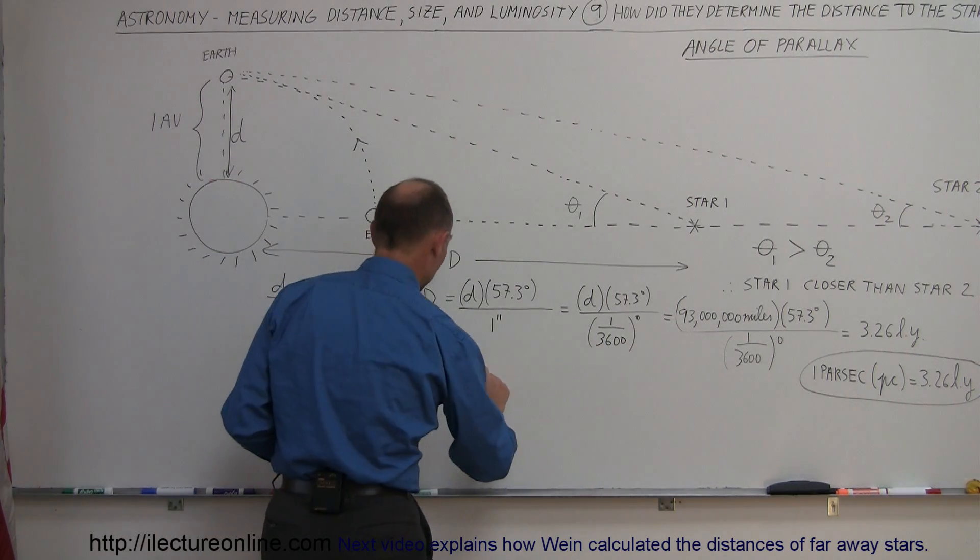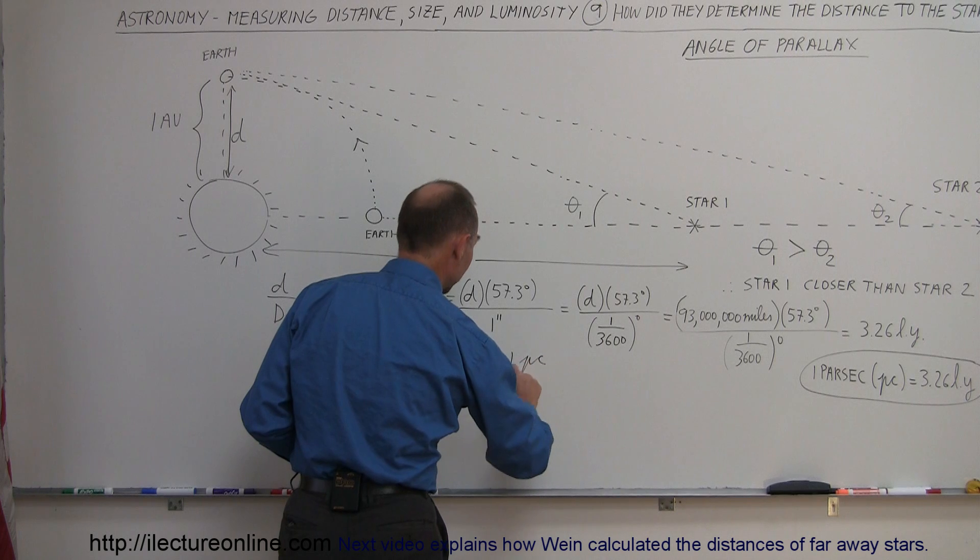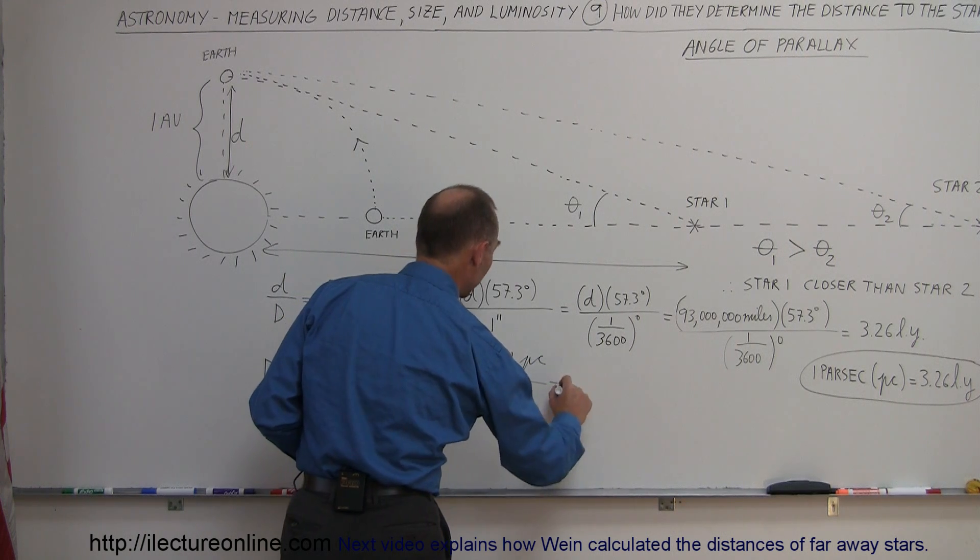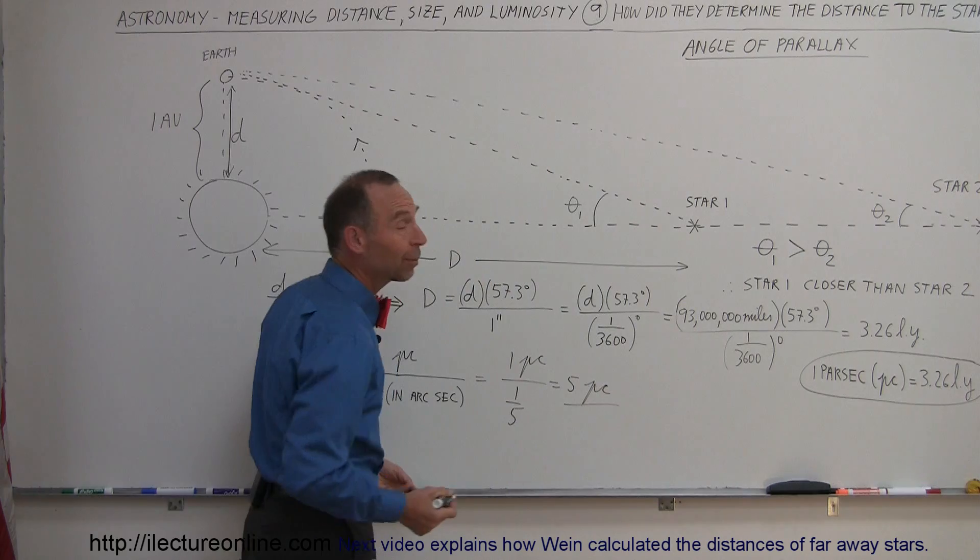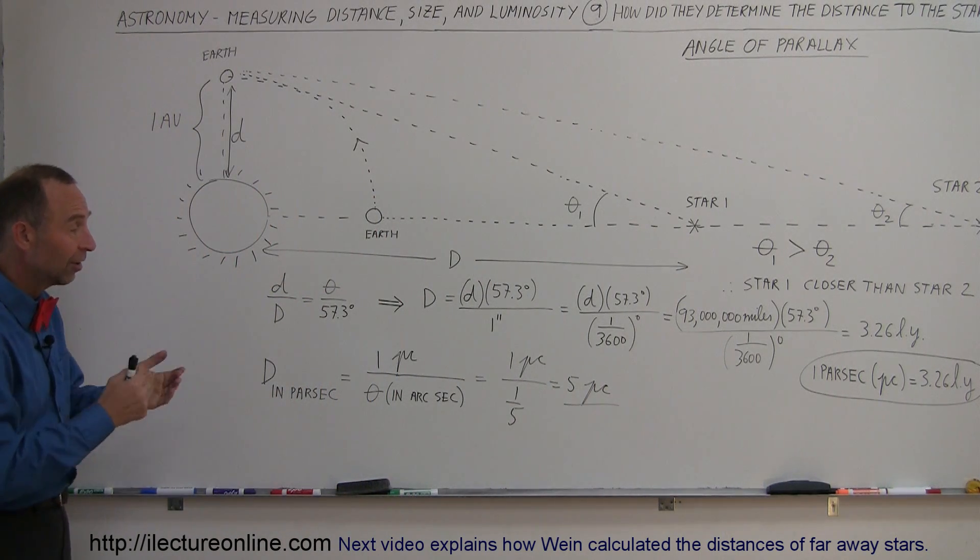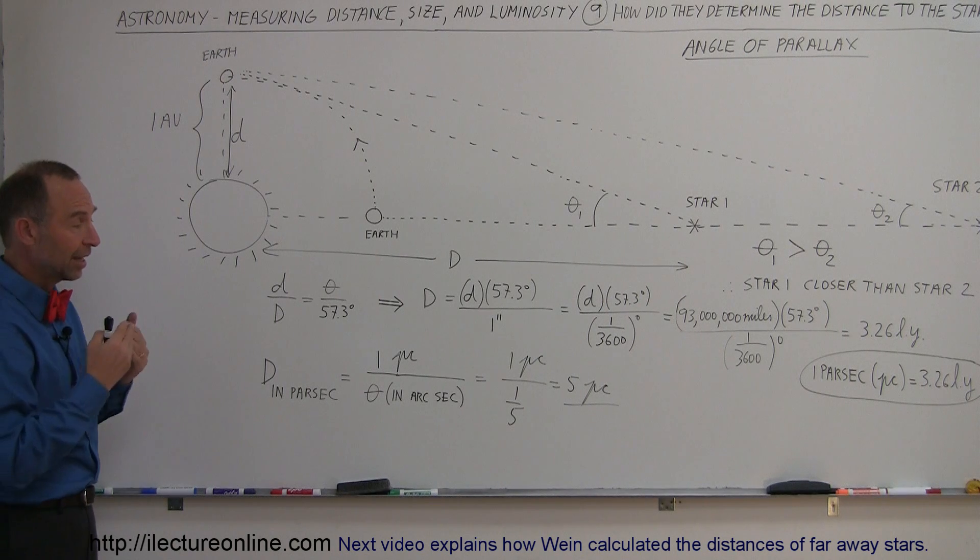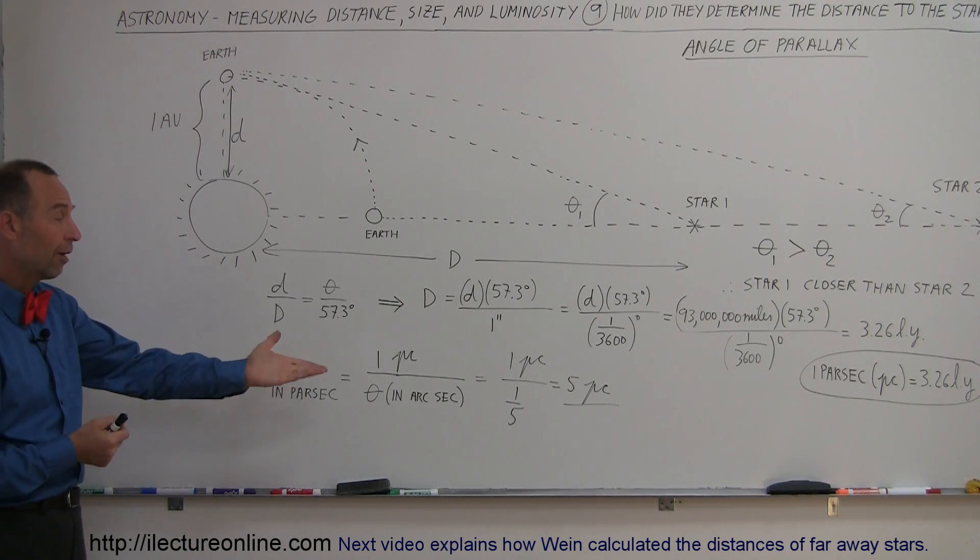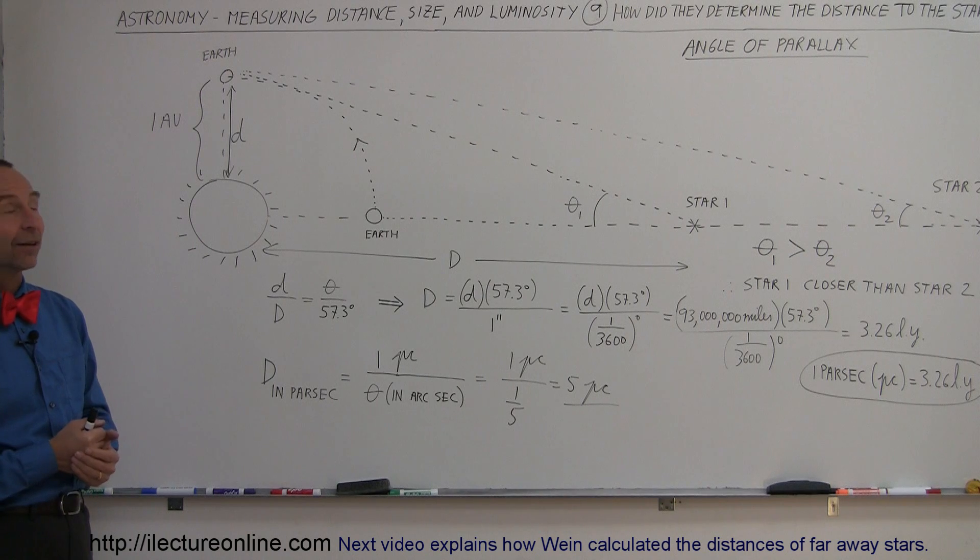And let's say for our example, the angle is 1/5th of an arcsecond. That would be equal to 1 parsec divided by 1/5th, which would be 5 parsecs. So you can see the equation is very simple after that. All you have to do is measure the angle in arcseconds, divide that into 1 parsec, and you know the distance. So 5 parsecs is roughly about 16 light years.